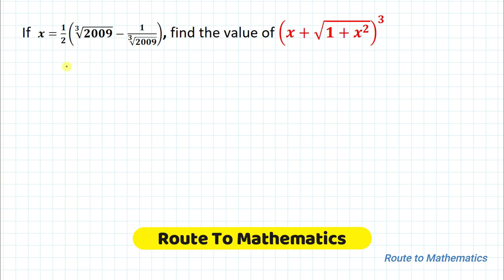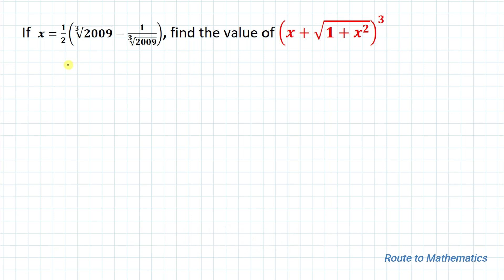Hello everyone, welcome to Root to Mathematics. In this video we are going to solve an interesting Olympic question. The given question is: if x equals 1/2 times the cube root of 2009 minus 1 divided by the cube root of 2009, then find the value of x plus the square root of (1 + x²), all cubed.